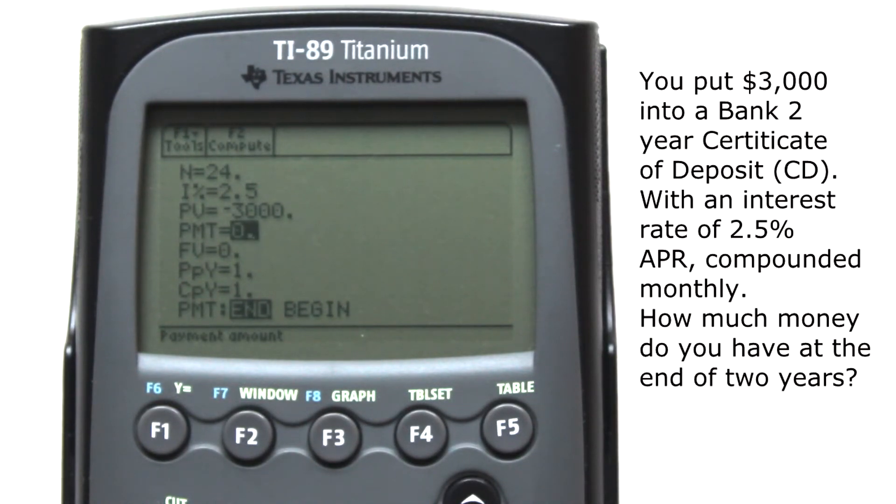PMT is Regular Payments Made. We didn't add to the CD throughout the 2 years, so we're going to leave this number as 0. FV, Fair Value. That's the variable we're calculating for. We'll come back to that later.